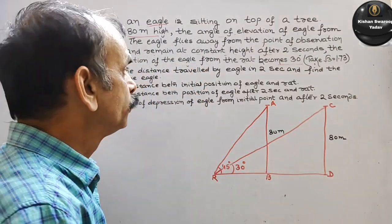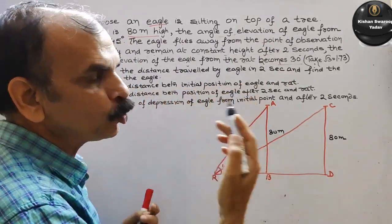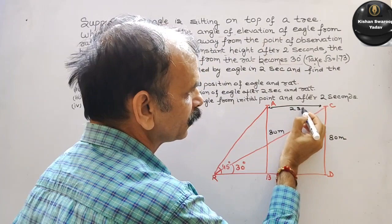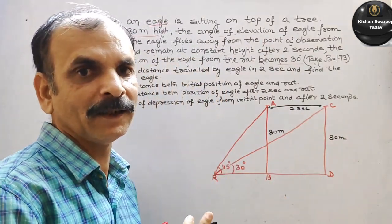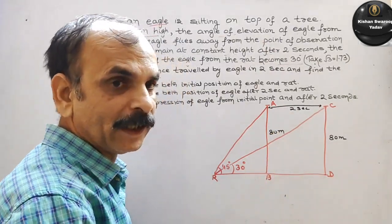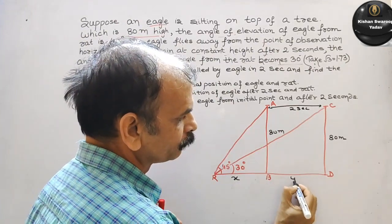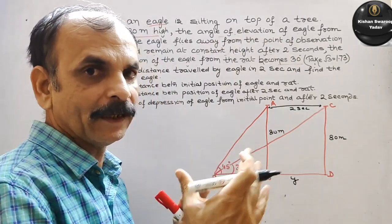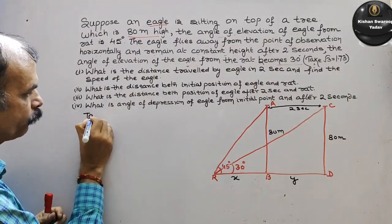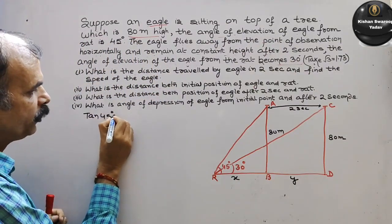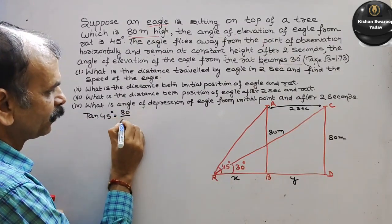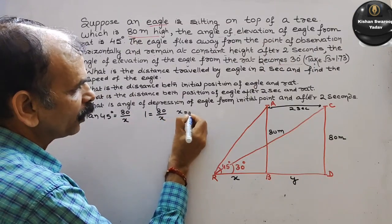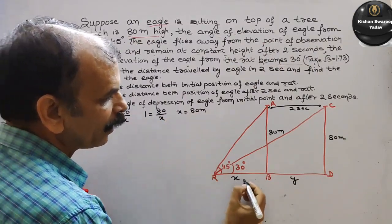अब question देखो: what is the distance traveled by the eagle in two seconds? तो two seconds में eagle कितना travel किया — from B to D, आपको find out करना है. Suppose this is your X, this is your Y. तो tan 45 पहले लेंगे. tan 45 is equal to 80 by X. tan 45 होता है one, तो one is equal to 80 by X, तो X is equal to 80 meters.